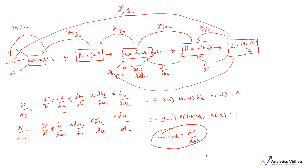Before we wrap up, let me summarize: to calculate gradients, we first create a computation graph and then use the chain rule of differentiation to calculate the derivatives. This is how gradient descent and backpropagation come together to make neural networks train on a particular problem. In the next videos, you'll be creating a neural network from scratch and writing your own backpropagation algorithm in NumPy. Thank you.